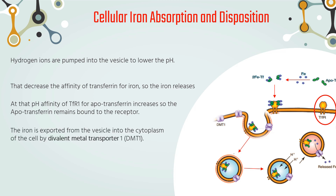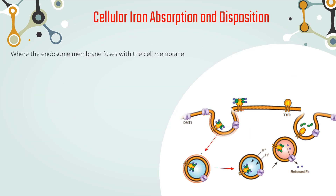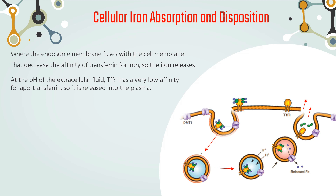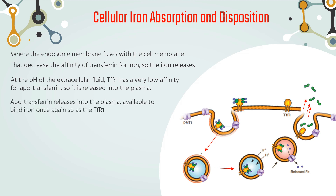At that lower pH, the affinity of transferrin receptor 1 for apotransferrin increases, so the apotransferrin remains bound to the receptor. The iron is exported from the vesicle into the cytoplasm of the cell by divalent metal transporter 1. The endosome returns to the cell membrane and fuses with it. At the pH of the extracellular fluid, transferrin receptor 1 has a very low affinity for apotransferrin, so it is released into the plasma, available to bind iron once again.